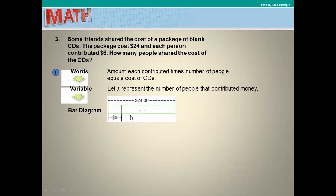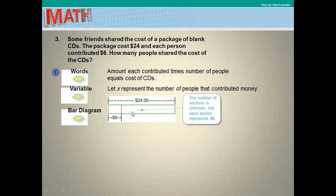The bar diagram shows the total cost is 24, with each section representing 6 dollars per person. Each section represents one person's share of 6 dollars, so the equation is 6 times x equals 24.